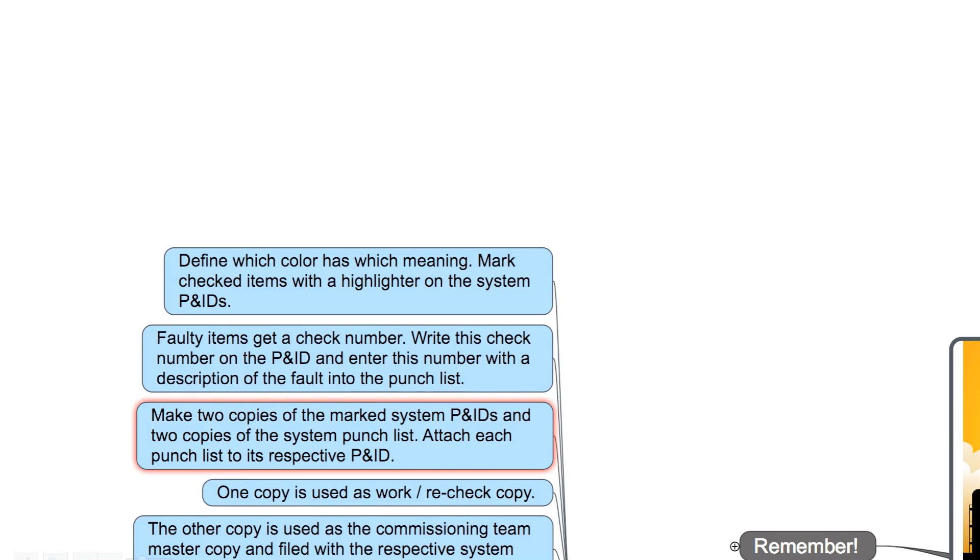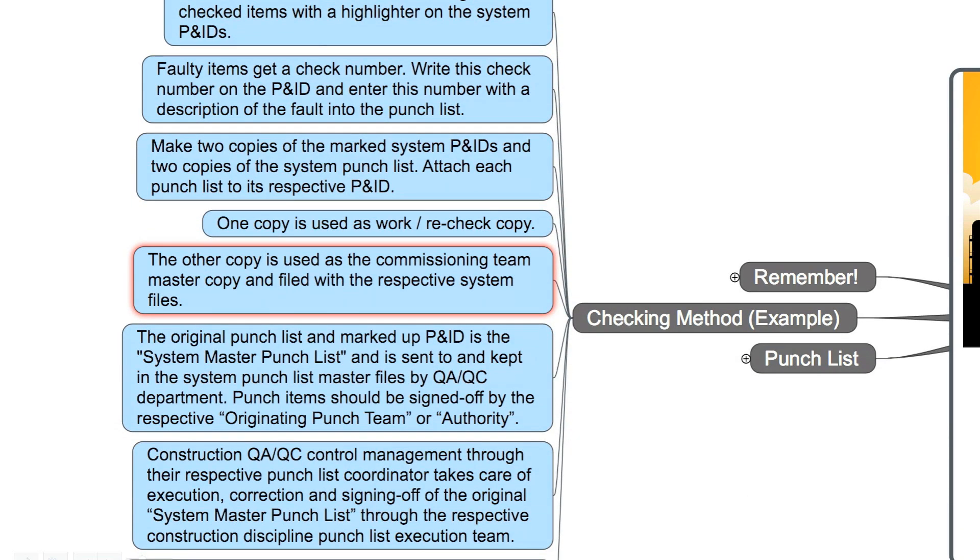Make two copies of the marked system P&IDs and two copies of the system punch list. Attach each punch list to its respective P&ID. One copy is used as a work or recheck copy. The other copy is used as a commissioning team master copy and filed with the respective system files.